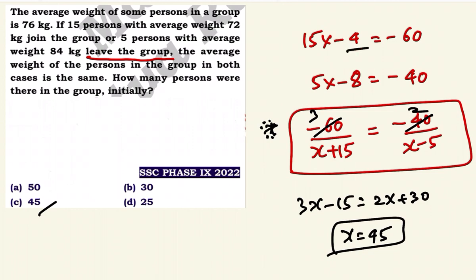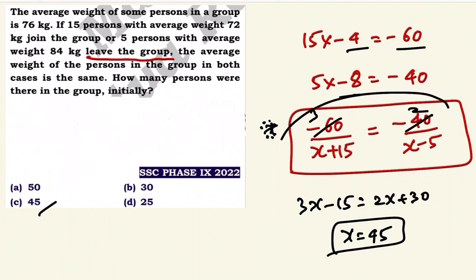15 into minus 4 is minus 60. How? The average is 78 minus 76 is minus 4... actually 76 minus 78 is minus 2, and 84 minus 76 is plus 8. So 5 into 8 is 40, with a minus symbol. Setting equal: minus 60 divided by x plus 15 is the same as minus 40 divided by x minus 5.